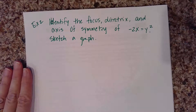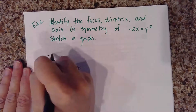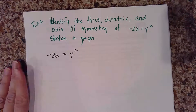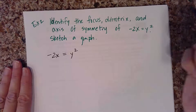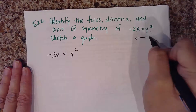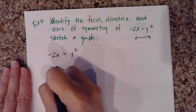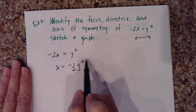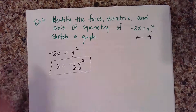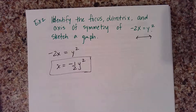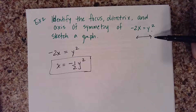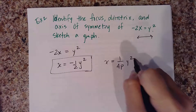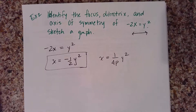Looking at the formulas on the previous page, it's always either solve for x or solve for y. The y is being squared here, so I know this is a parabola that's going to open left and right. The first thing I'm going to do is divide both sides by negative 2, or in other words multiply by negative one half, to make this equation in the correct format.